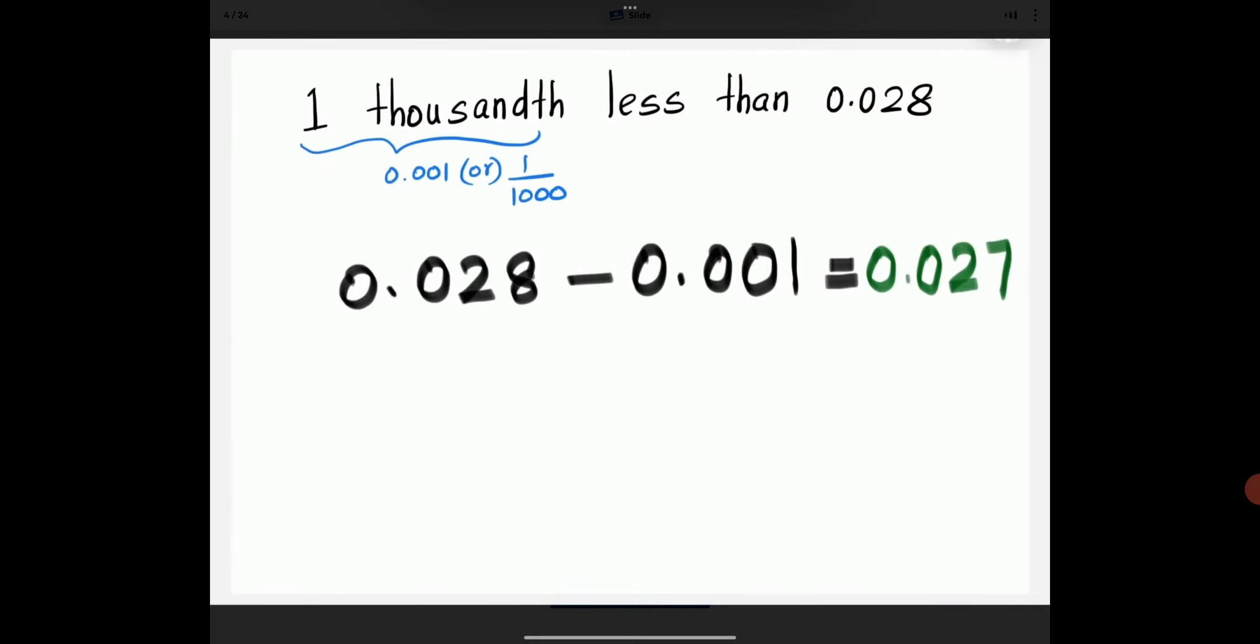1 thousandth is 0.001. 1 thousandth less than 0.028 is 0.027.